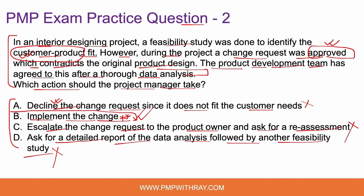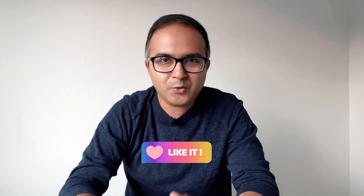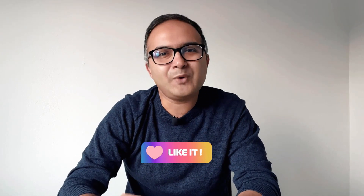Sometimes in your PMP exam you will find very short, crisp answer choices. Not all correct answers need to be verbose or have a lot of detail. Do not fall for the view that a short answer choice like 'implement the change' is too brief to be correct. If option B simply says 'implement the change,' you have to go ahead and do it — and that is why it is the correct option. If you are liking the video, please press the like button. It helps me understand that you value this content and motivates me to prepare more such videos. Now let's move on to question number three.